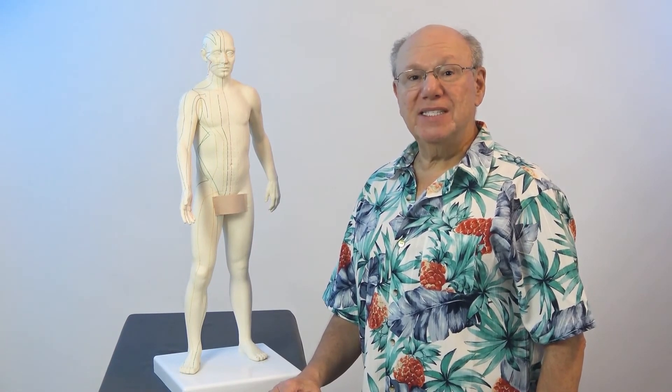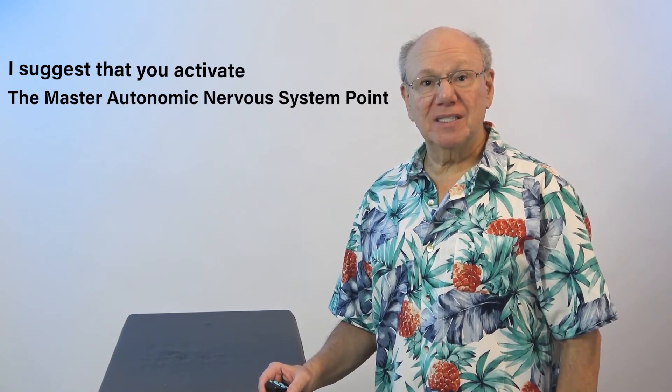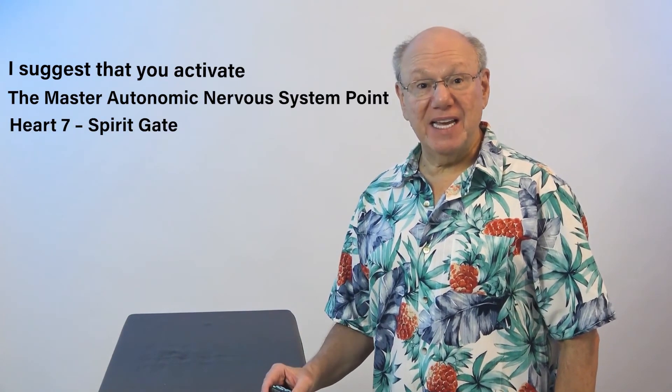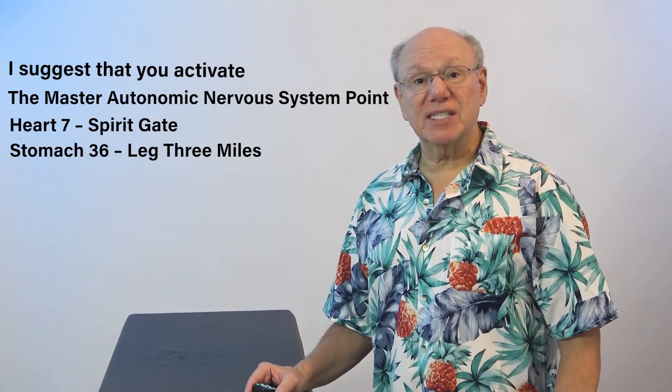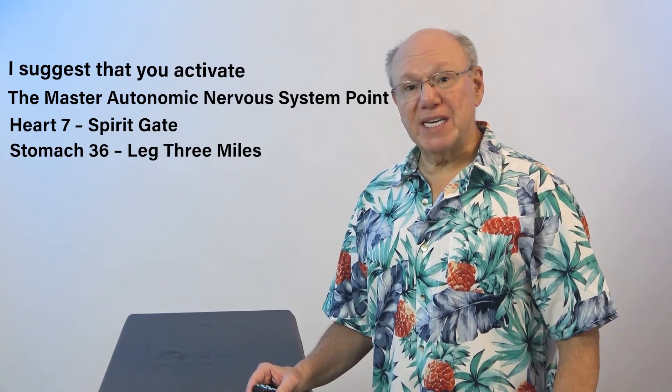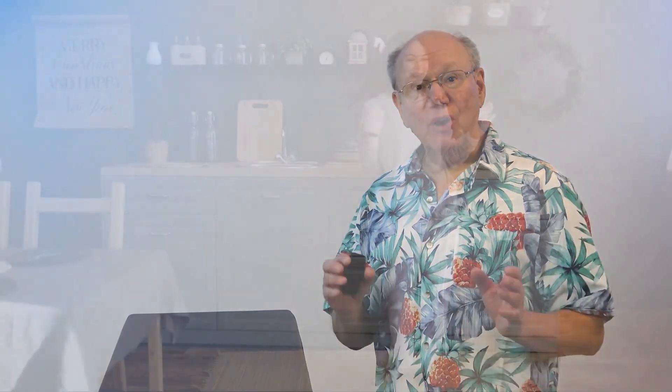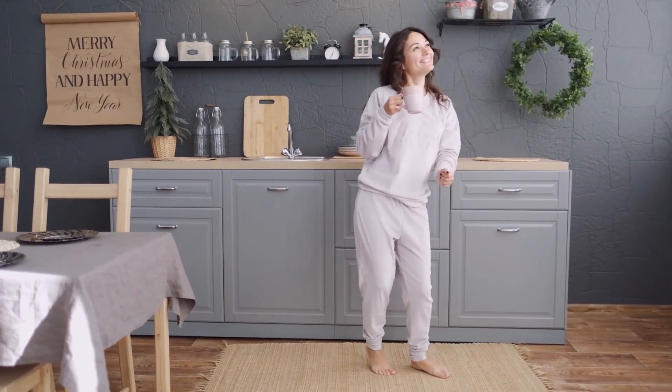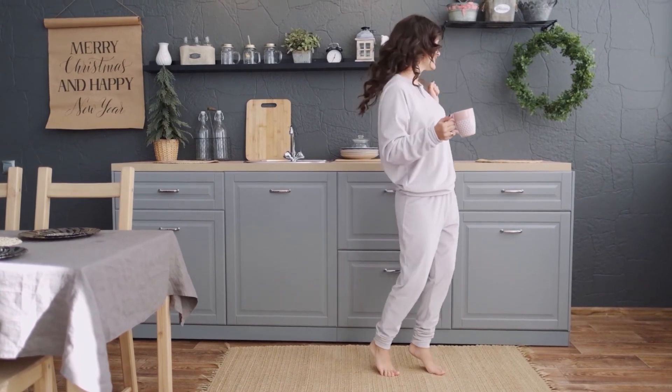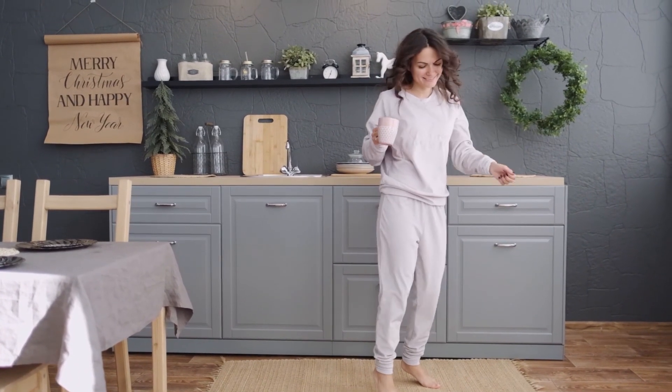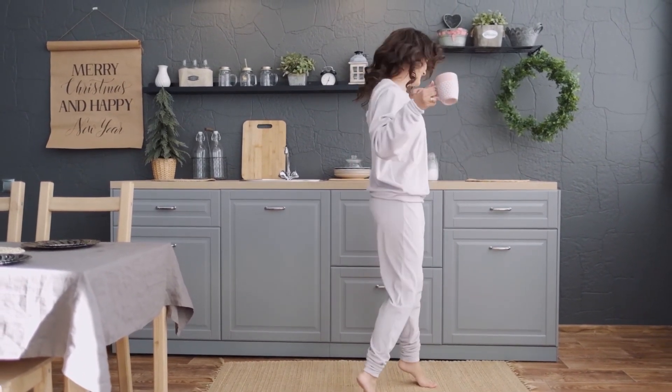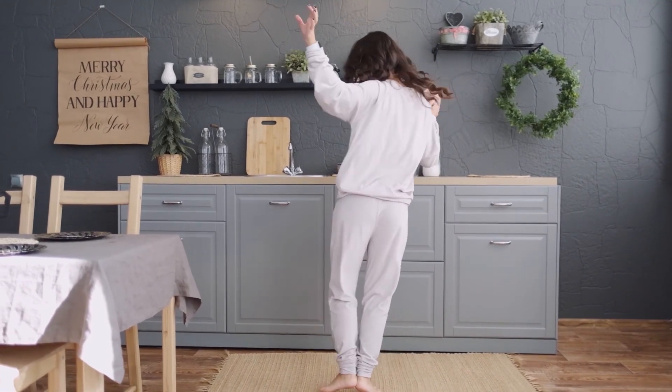If your body is feeling the effects of stress, I suggest that you activate the Master Autonomic Nervous System Point, Heart 7 Spirit Gate, and Stomach 36 Leg 3 Miles, three times a day for 30 days, then use as needed thereafter. And if you know someone who is feeling the effects of stress on their body, I encourage you to share this video with them. It is intended to relax the body and let them get back to enjoying life.